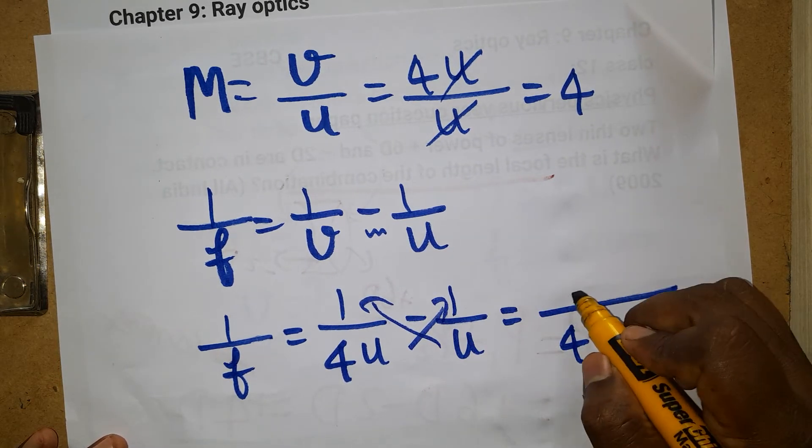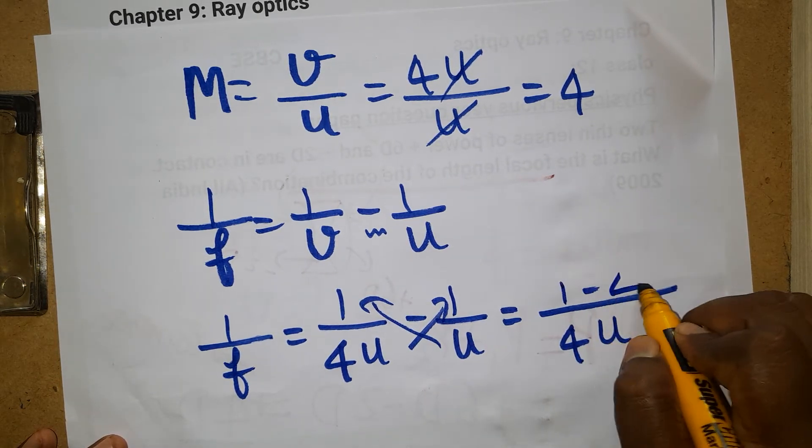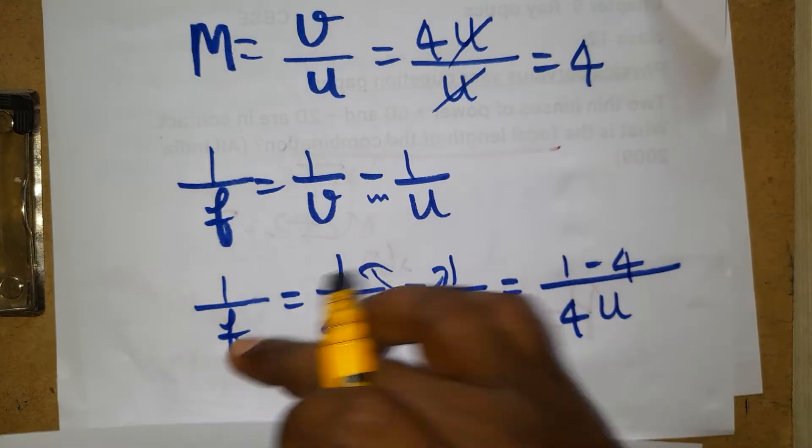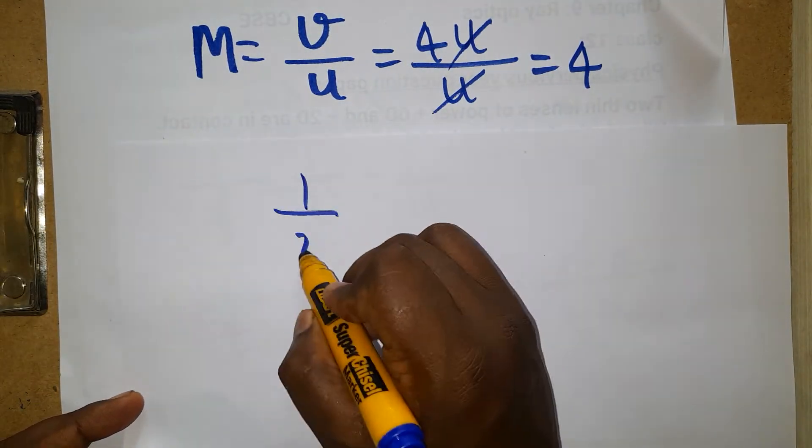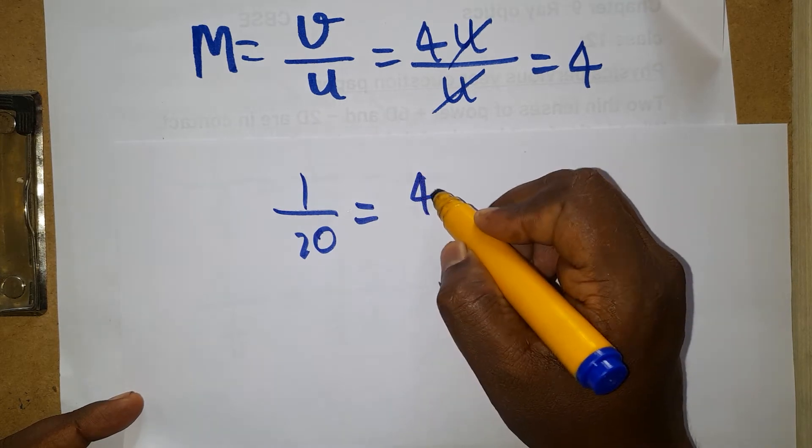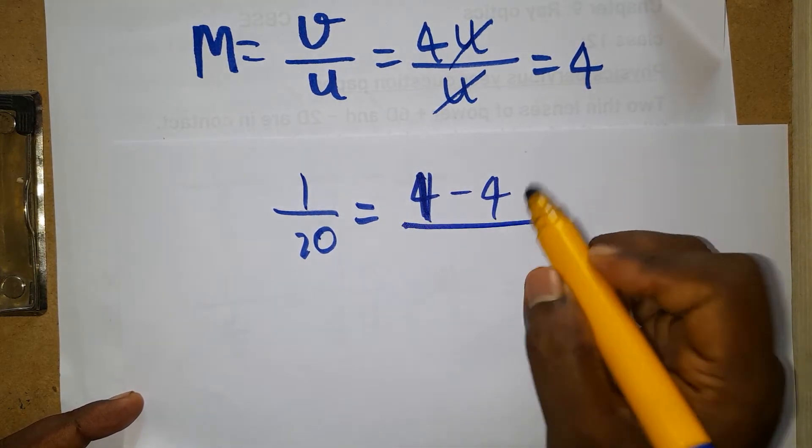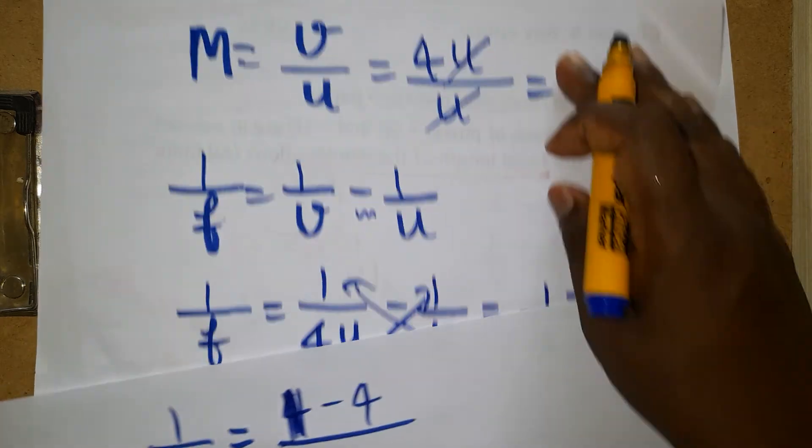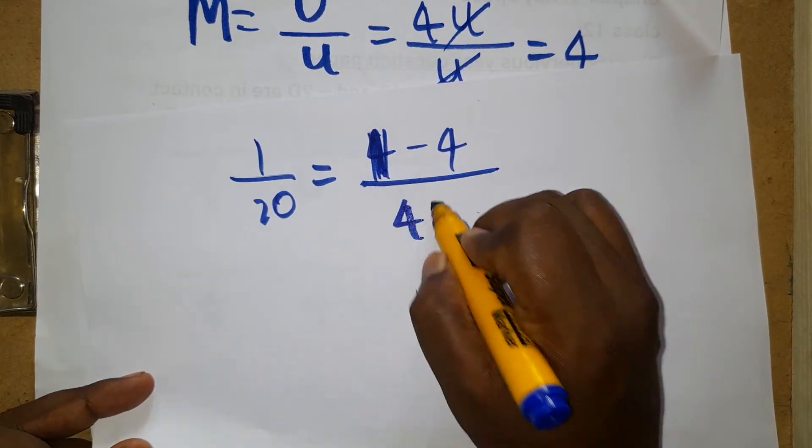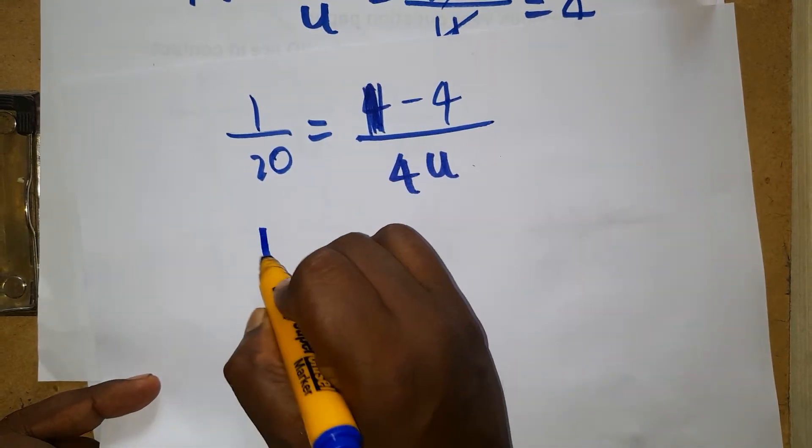It is going to be 1 minus 4. I'm taking the common LCM. Now f is 20 centimeters. 1 divided by 20, so here 1 minus 4 divided by 4u, which is going to be minus 3.